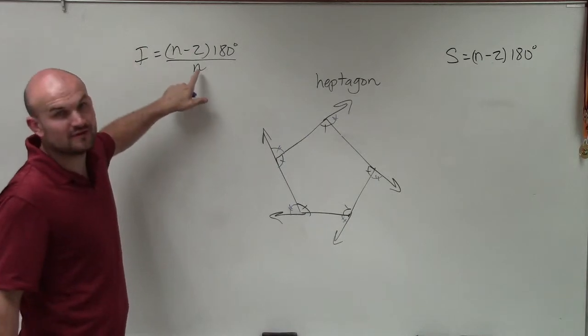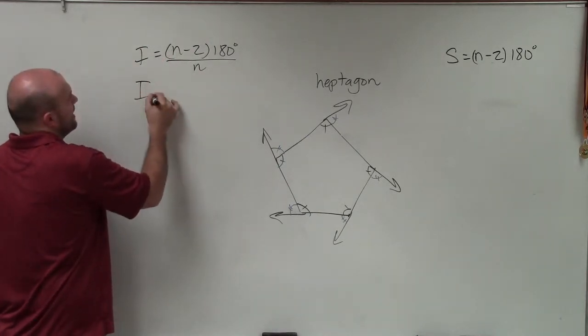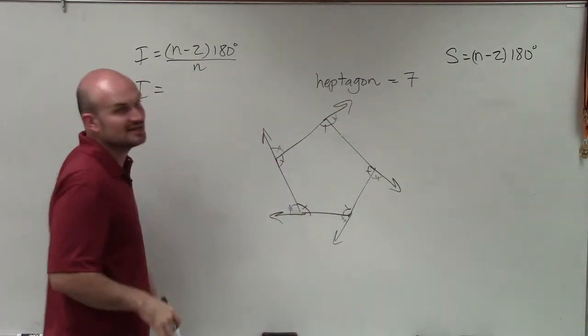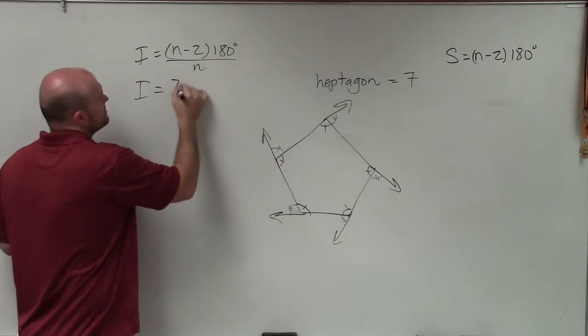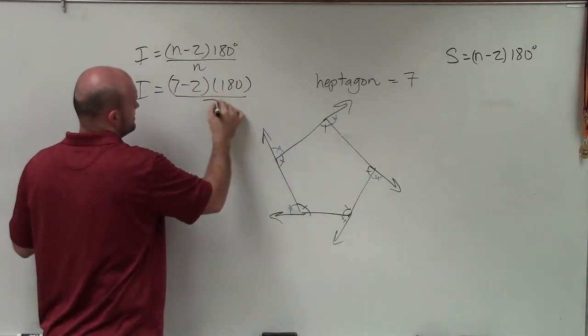Well, I have a formula for finding the measure of an interior angle. So to do that, I have I equals. And now I have a heptagon, which has seven sides. So let's go to the formula: (7 minus 2) times 180 divided by 7.